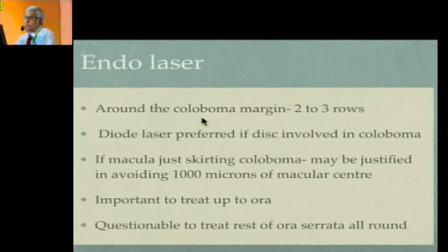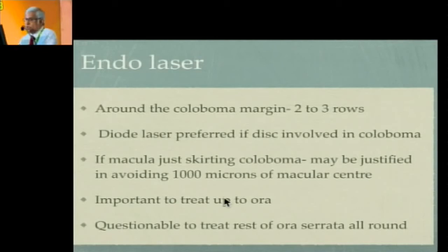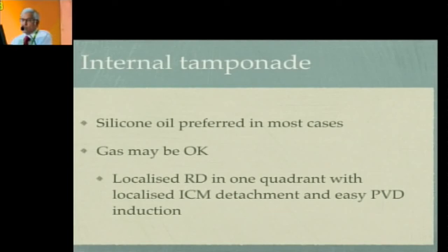Once you flatten the retina, treat the coloboma margin with two to three rows of laser. Diode laser is preferred because it doesn't risk burning the nerve fiber layer accidentally, especially in eyes where the disc is involved in the coloboma. It is important to treat up to the ora serrata. Sometimes the macula may be just outside the coloboma margin, and if you go across that margin you risk destroying the macula, so you would skirt the macula — leaving about 200 microns untreated on either side — accepting the risk that the retina may remain attached after oil removal. Silicone oil is preferred in most cases because of the large coloboma margin area requiring tamponade, but gas may be acceptable in eyes with a localized detachment in one quadrant, localized ICM detachment, and easy PVD induction.